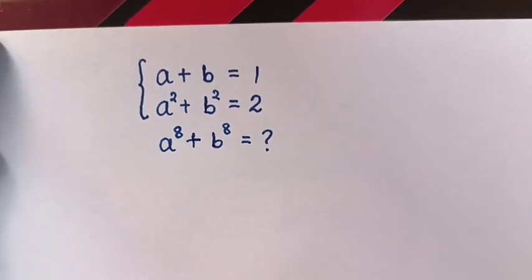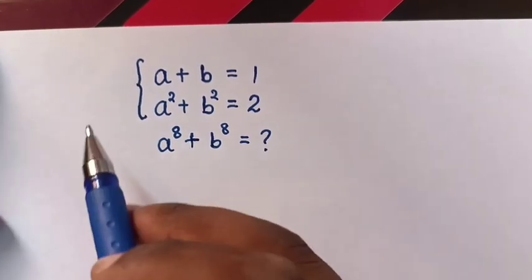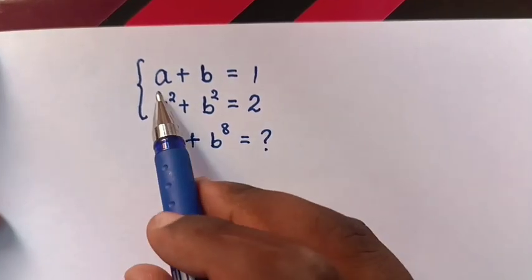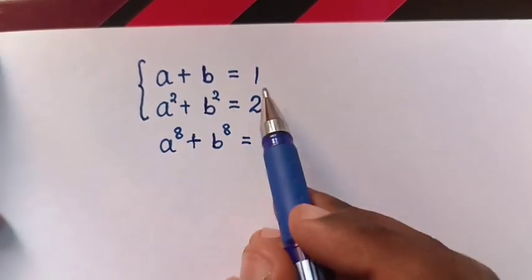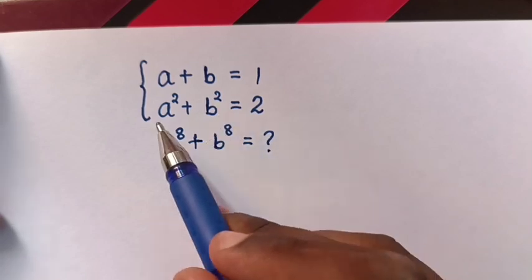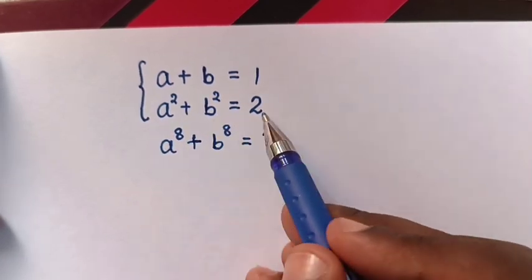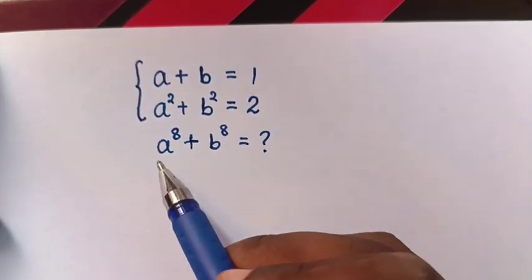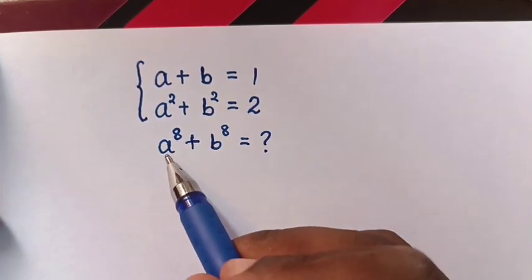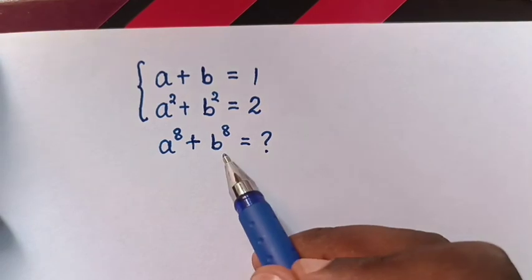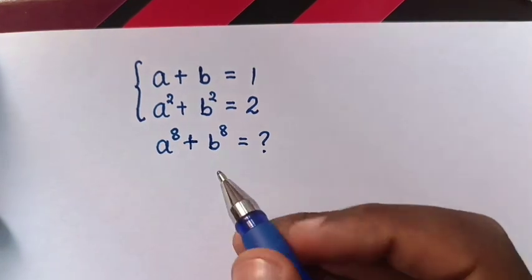Hello, how to solve this system of equations: a plus b is equal to 1, a square plus b square is equal to 2, to find the value of a power 8 plus b power 8.